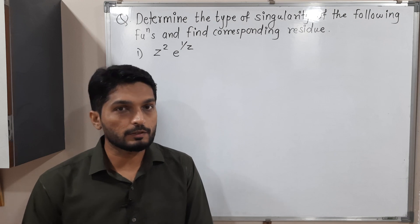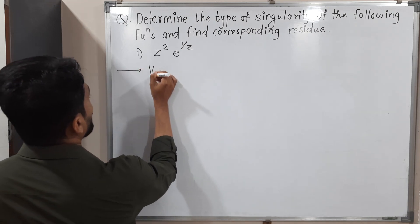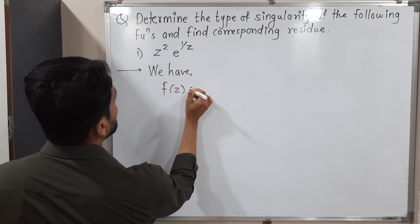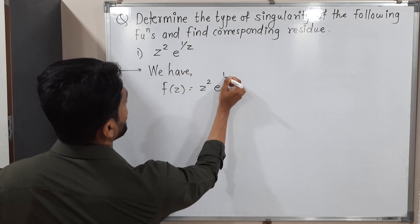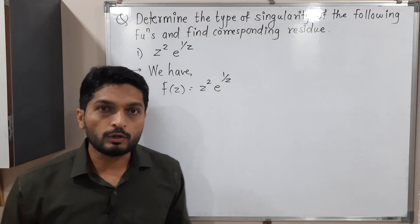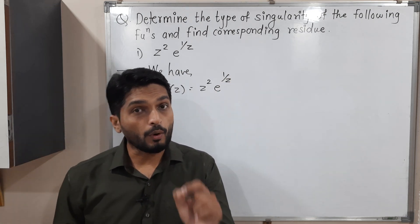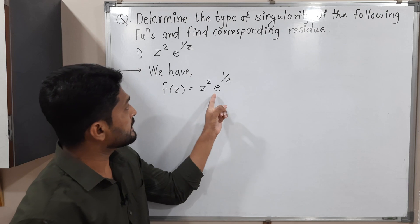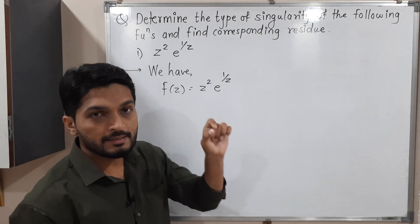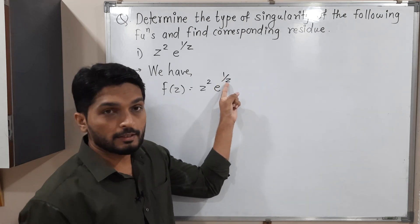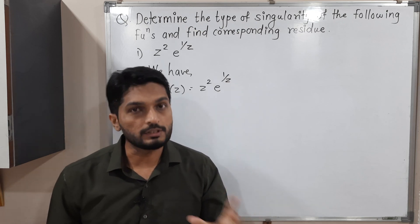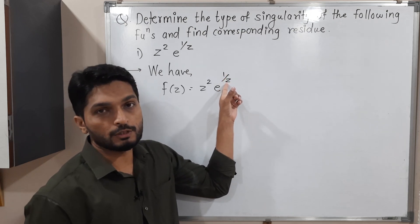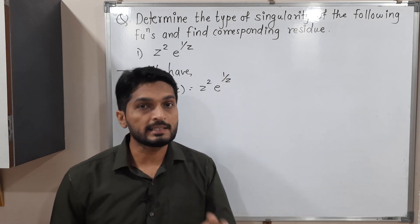The first given function is f(z) = z² · e^(1/z). A singular point is a point where the denominator is zero. This function does not have an explicit denominator, but in e^(1/z) the power has a denominator that becomes zero when z = 0.